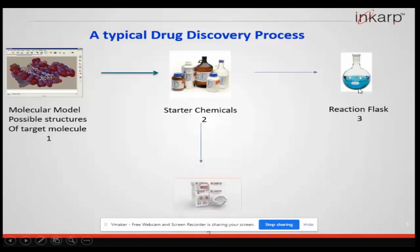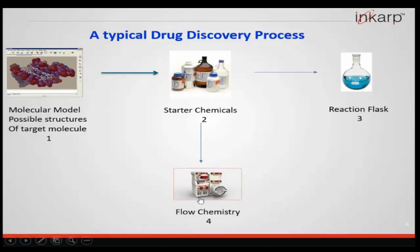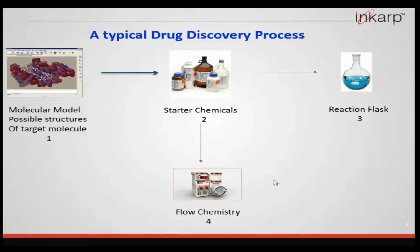Nowadays, there is another option called flow chemistry. Flow chemistry is really an upcoming field where reactions that cannot be achieved through an RB flask can be very easily done using flow chemistry. The only restriction is the reaction should happen in a clear solution form. If there is slurry or solid particles, some precautions are needed. The great advantage of flow chemistry is that highly exothermic or uncontrollable reactions where lots of side products would form can be very easily avoided.